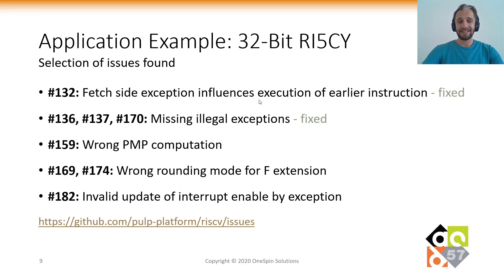A total of 13 issues were identified in this core. The first was a fetch-site exception that influenced the execution of earlier instructions, so that the update of machine CSRs was done incorrectly in cases where the earlier instruction also caused an exception.